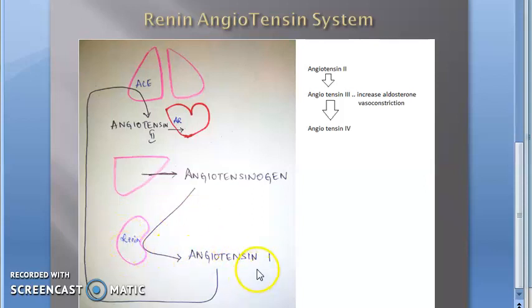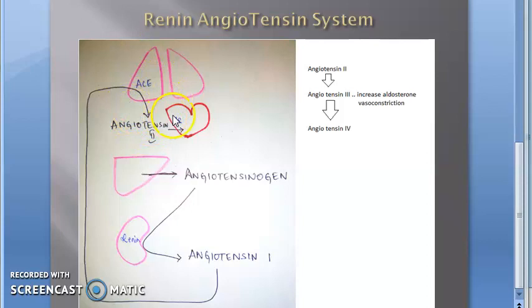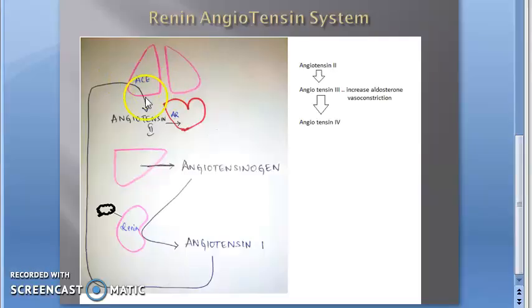Angiotensinogen gets converted to angiotensin 1. Then something called angiotensin-converting enzyme — ACE — converts angiotensin 1 into angiotensin 2.